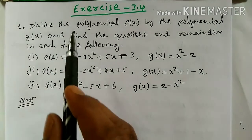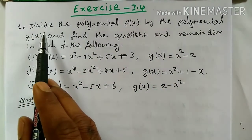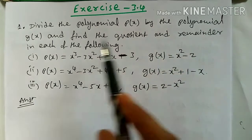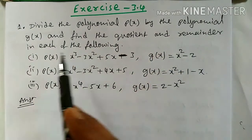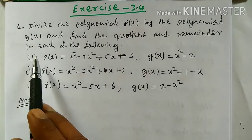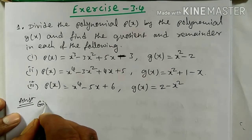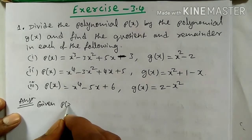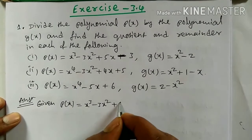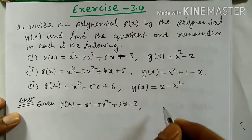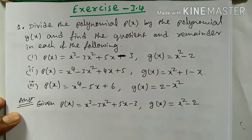Now, Exercise 3.4, Question number 1: divide the polynomial P of X by the polynomial G of X and find the quotient and remainder in each of the following. There are 3 questions — first, second, third. First question: given P of X is equal to X cube minus 3X square plus 5X minus 3, and G of X is equal to X square minus 2.